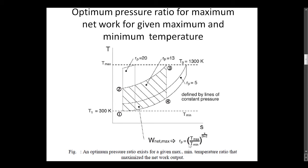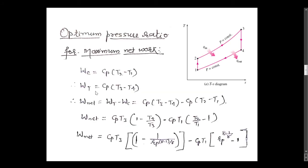For maximum net work, the pressure ratio should be equal to (T_max upon T_min) raised to gamma upon (2 × gamma minus 2). This expression will be derived in the further slides. Now we proceed to the derivation of the optimum pressure ratio for maximum net work.